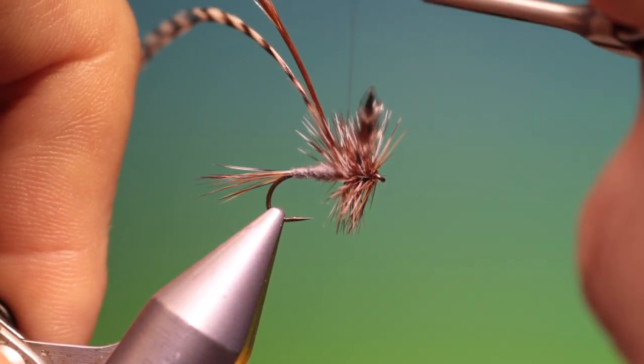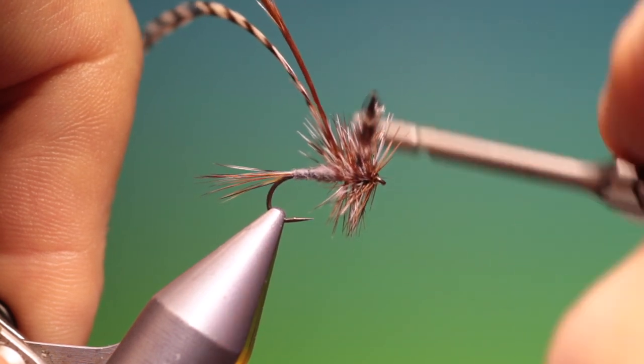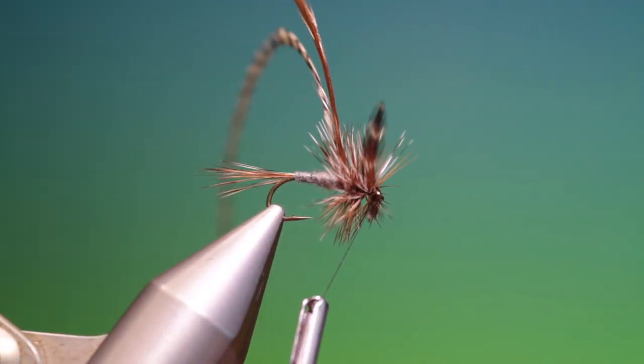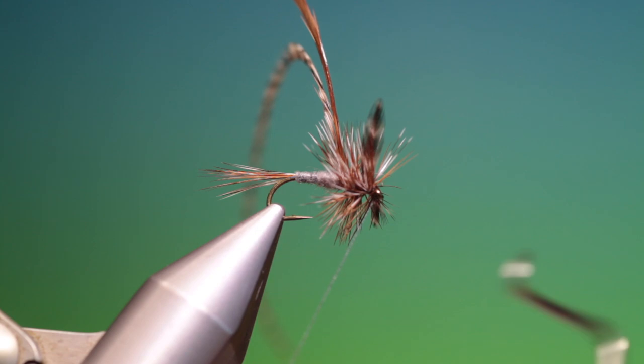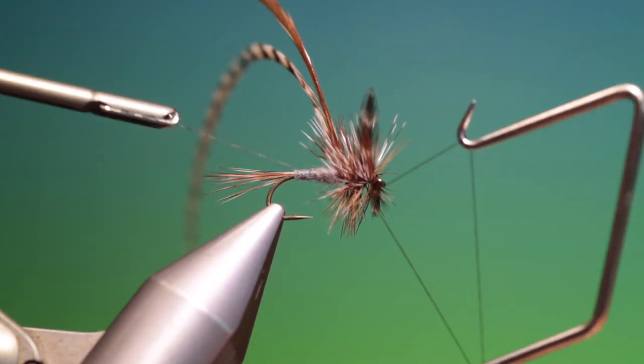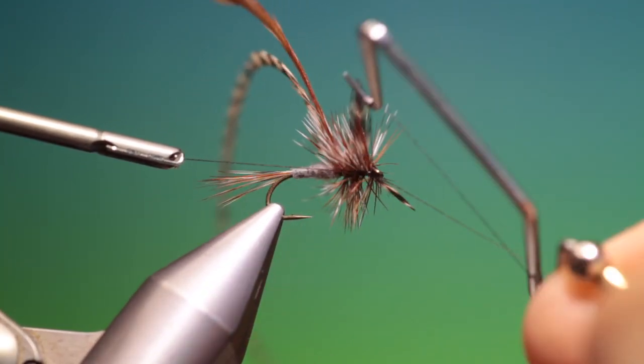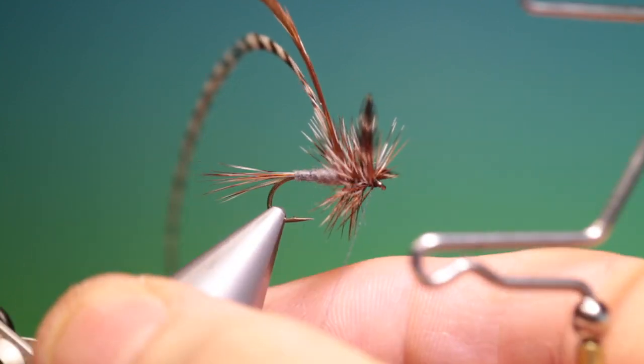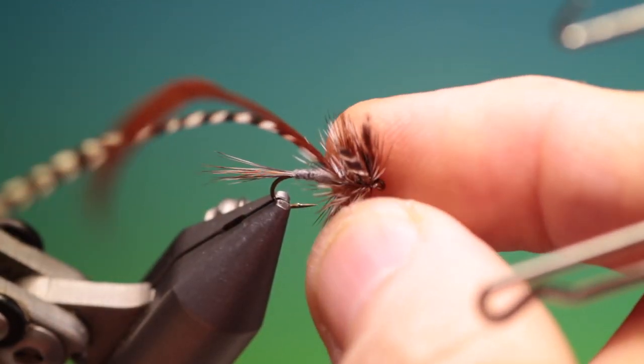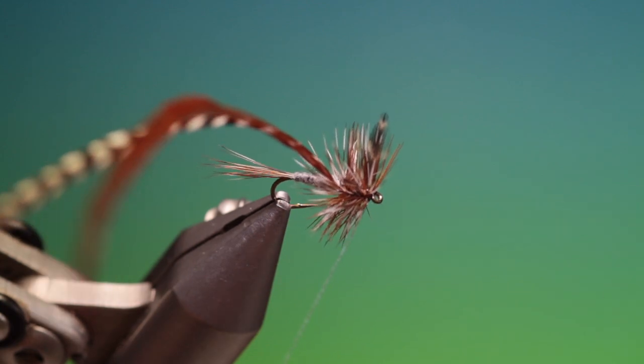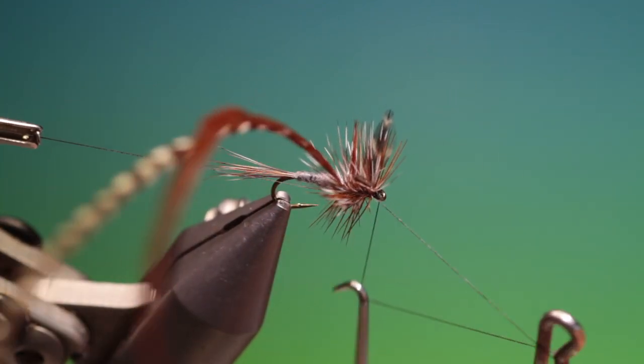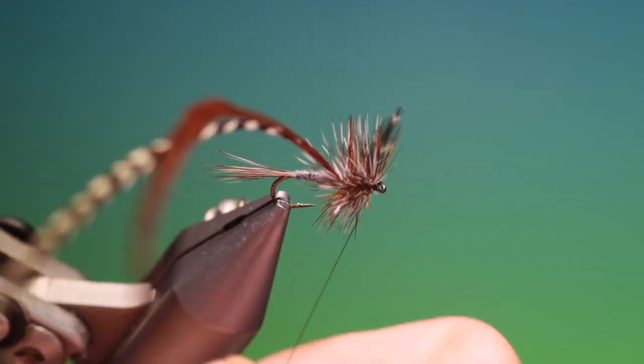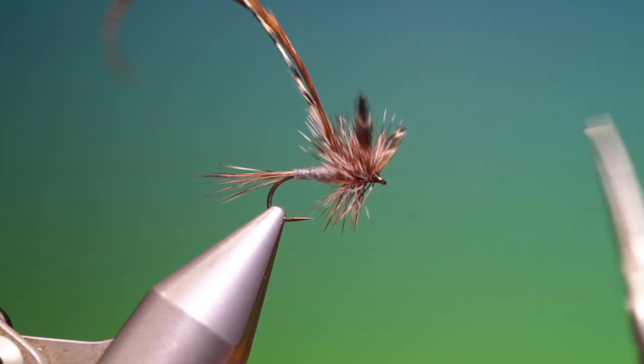And we'll go through the hackle forward until we've been on the hook eye. Whip finisher. Okay, and one more. Secure that. Remove the tying thread.